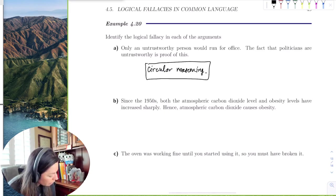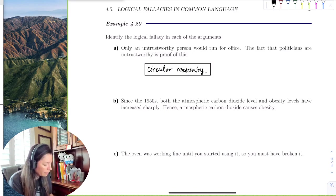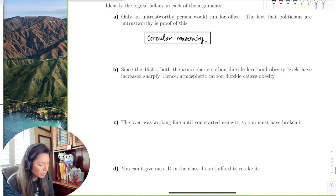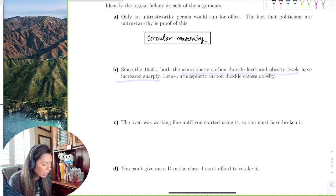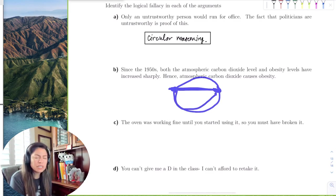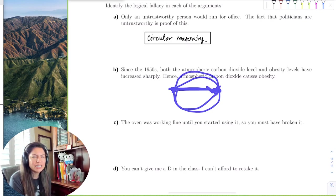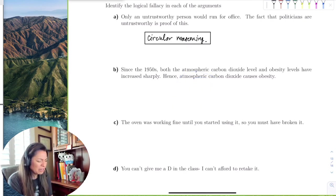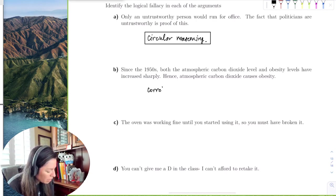The second example we have is, in the 1950s, both atmospheric carbon dioxide level and obesity levels have increased sharply. Hence, atmospheric carbon dioxide causes obesity. And you're like, well, no, here's point A, point B. There's a relationship here, but does one cause the other? Does obesity cause more atmospheric carbon dioxide? Or does atmospheric carbon dioxide cause obesity? And you're like, nothing causes any of that, right? And so we would say that this is correlation implies causation.